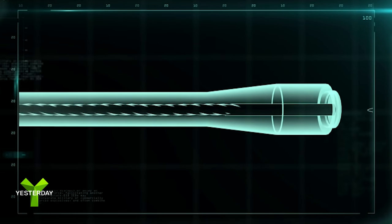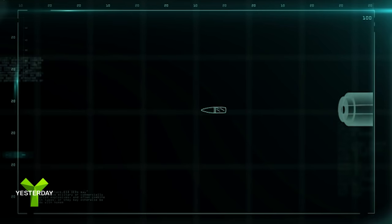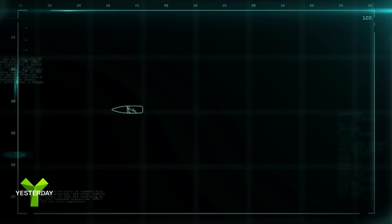These grooves in the barrel cause the bullet to spin and fly straight. They also etch a ballistic fingerprint in every bullet that'll match the gun it was fired from.